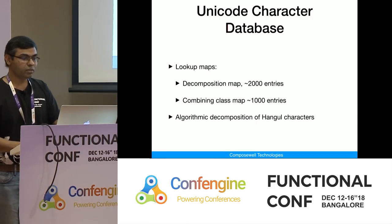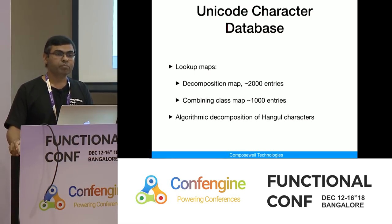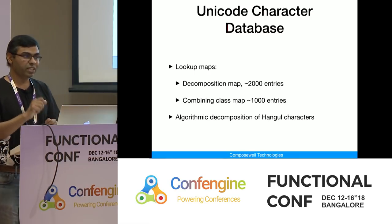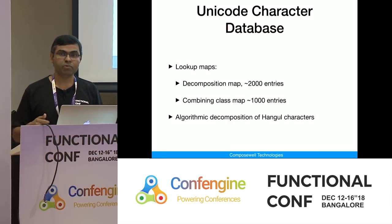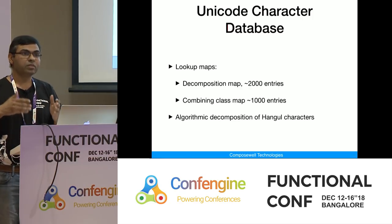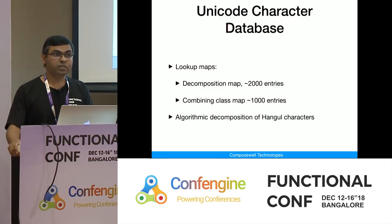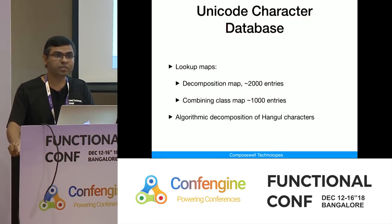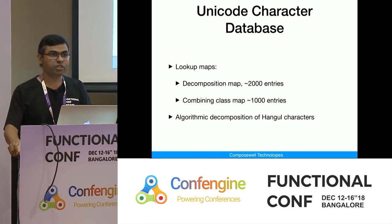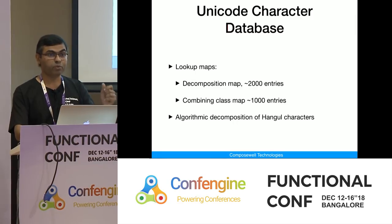When you decompose a composed character into multiple characters, you will have a starter and combining characters following it. The combining characters need to be put in a certain order because if the order is different, your result will be different and you can't compare deterministically. You need the combining characters reordered in a standard form. To do that, we need a decomposition map, a combining class map, and algorithmic decomposition for Hangul characters — the Chinese, Japanese, and Korean characters — which are in the tens of thousands.